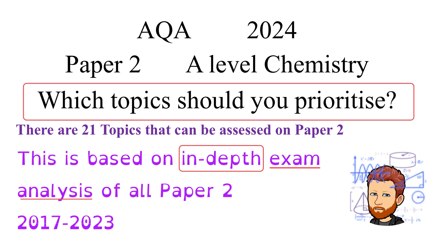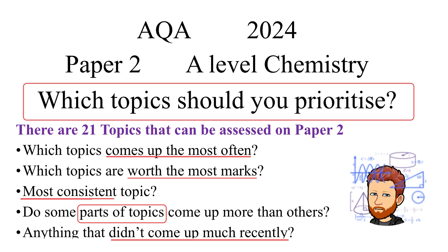Hello and welcome to this A-Level Chemistry video where I'm going to help you prioritise your revision for the Paper 2 exam for AQA Chemistry. There are 21 different topics that you can be assessed on in Paper 2 and I've done an in-depth exam analysis of all of the Paper 2s to help you find out which topics come up most often, which are worth the most marks, whether there are consistent topics assessed every time, and whether some parts of topics come up more than others.